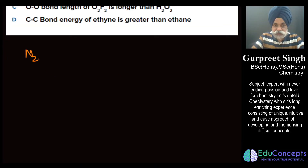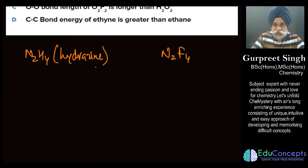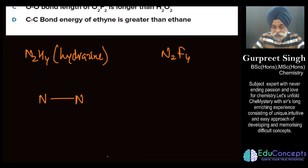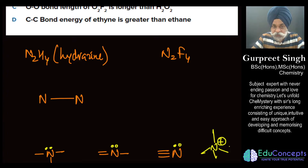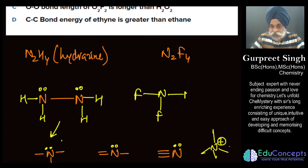The first option compares the N–N bond length in N₂H₄ (hydrazine) with that in a fluorinated compound N₂F₄. First, draw the Lewis dot structure. Nitrogen can bond with three single bonds while retaining a lone pair. For N₂H₄, we draw both nitrogen atoms each with one lone pair and three sigma bonds, and similarly for the fluorine compound.